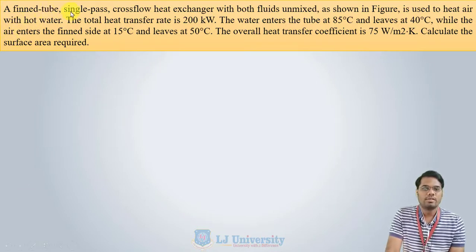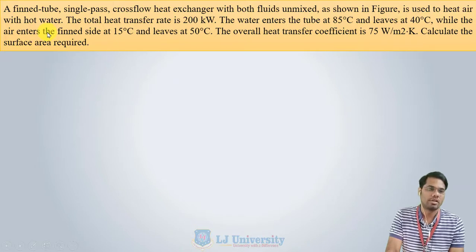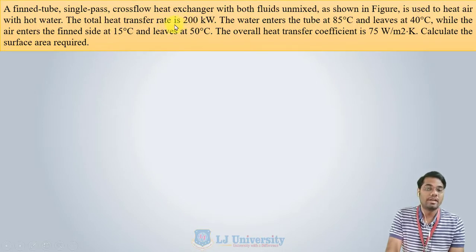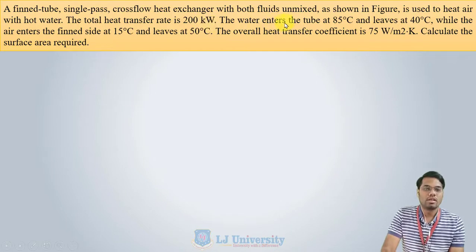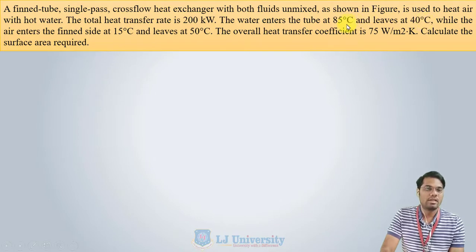A finned tube single-pass cross flow heat exchanger with both fluids unmixed, as shown in the figure, is used to heat air with hot water. Hot water is our hot fluid and air is our cold fluid. The overall heat transfer rate Q is 200 kilowatts. The water enters the tube at 85°C and leaves at 40°C — so TH1 = 85°C and TH2 = 40°C.